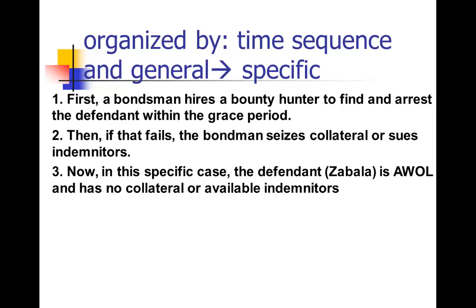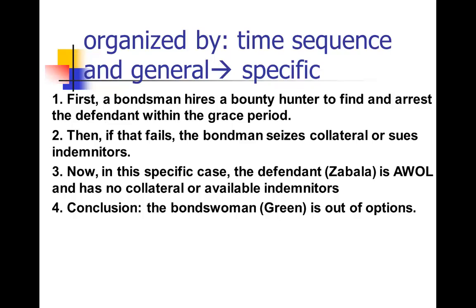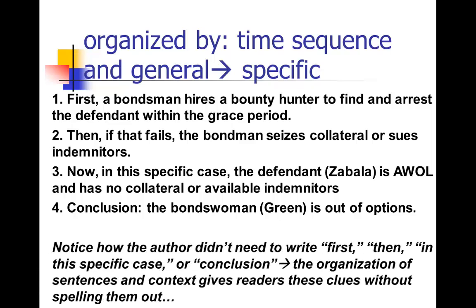It gives the general case first, and then it moves to the specifics of this particular case. Now in this specific case, the defendant Zabala is AWOL, and for some reason had no collateral or indemnitors available. So what does that mean? Here's the conclusion: since none of that happened and there's nothing available, the bondswoman Green is out of options — that means she's going to have to pay the $31,000. Notice how when I'm laying out the logic I used 'first,' 'and then,' 'now, conclusion.' But the author, when writing this paragraph, didn't need all those pointers because it was organized in a logical way — the reader can just follow it without spelling out 'first,' 'and then,' 'and now.'